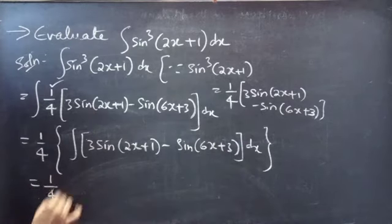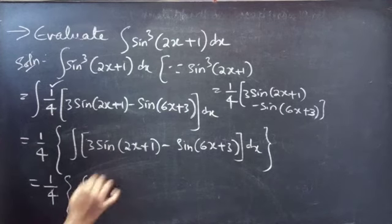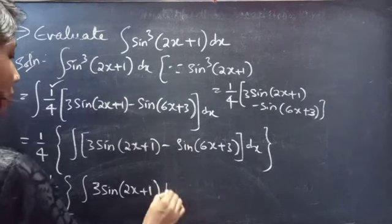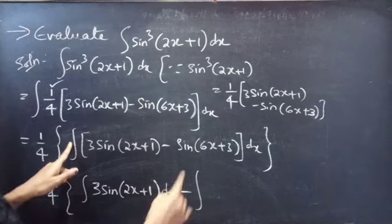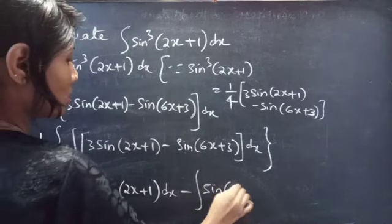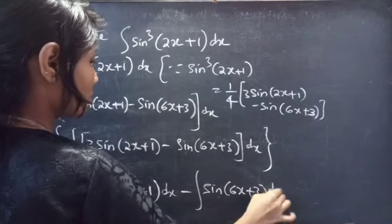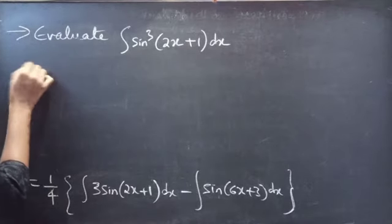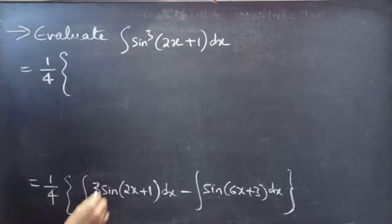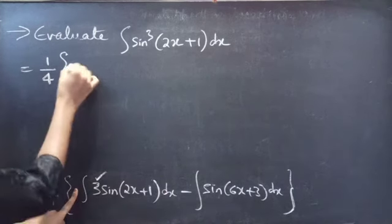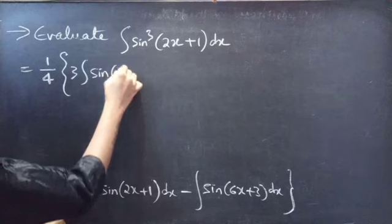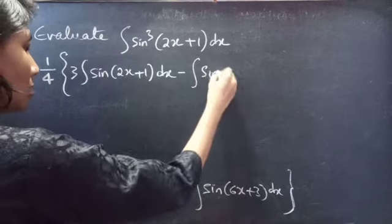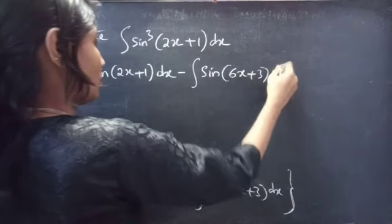Taking the constant outside the integral, we get 1/4 into the integral of [3 sin(2x+1) minus sin(6x+3)] dx. This equals 1/4 into [3 times the integral of sin(2x+1) dx minus the integral of sin(6x+3) dx].